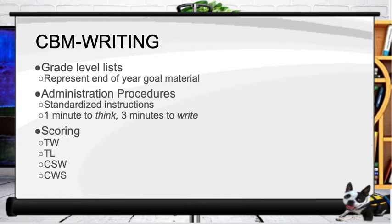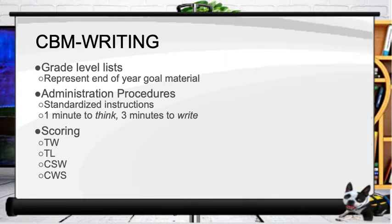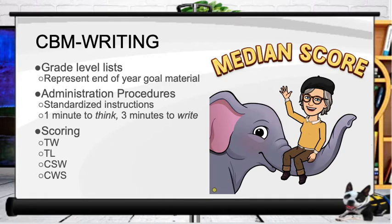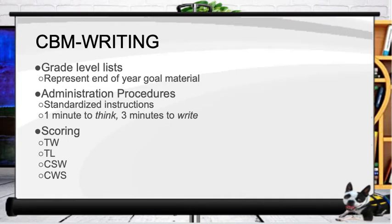Just like our other CBM measures, the first time we do a writing CBM we have three equivalent story starters that are going to be used. It doesn't matter whether you are doing a universal screening or progress monitoring — we give all three in the same session. It's recommended to do it in one session to save setup time and to get a more accurate score. We're going to take the median score of the three samples as our first data point on the student's graph. After that, you want to gather 20 to 30 different but equivalent story starters to monitor students' progress throughout the year.